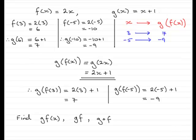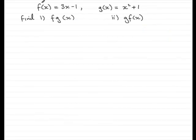Now, what I'd like to do is show you a few more examples on this. In this example, I've got f of x equals 3x minus 1 and g of x equals x squared plus 1. We've got to find in part 1 fg of x and in part 2 gf of x.